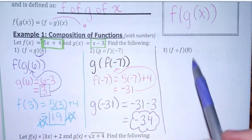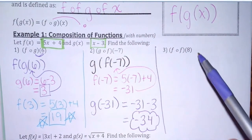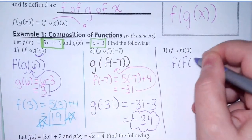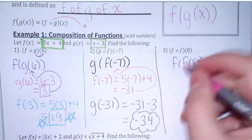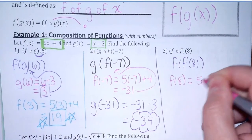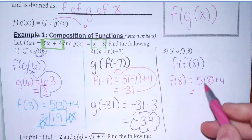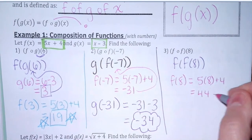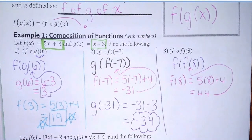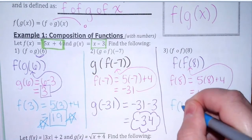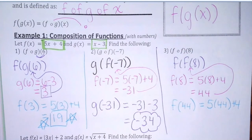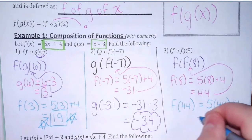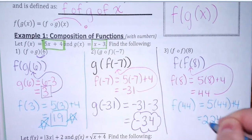You can actually compose a function with itself, which is what's going on here. This would be f of f of 8, so I'm basically just going to plug numbers into the same function. f of 8 is 5 times 8 plus 4 — 40 plus 4 is 44. Then sub 44 back in using exactly the same function: f of 44 is 5 times 44 plus 4. We should get 224 as our final answer.